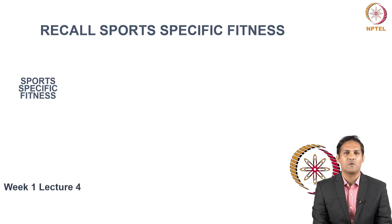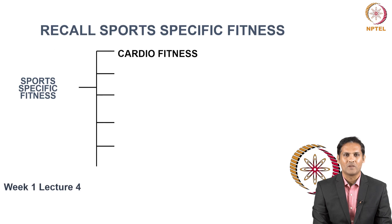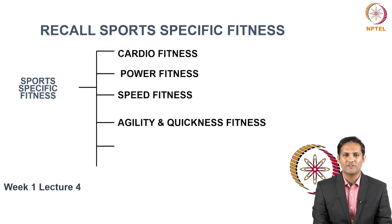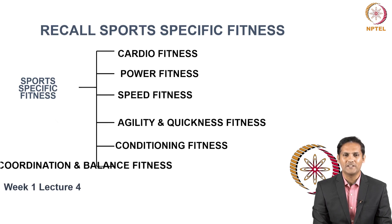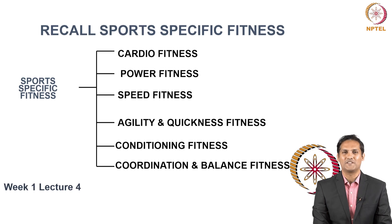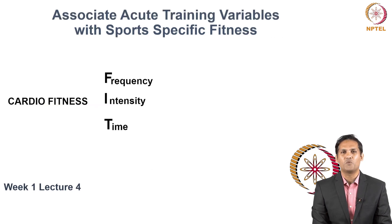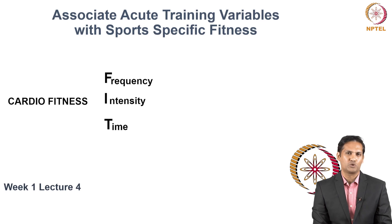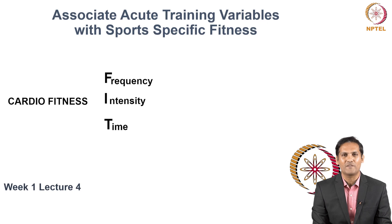Let's start by recollecting what the sports specific fitness variables are, which include cardio fitness, power fitness, speed fitness, agility and quickness fitness, conditioning fitness, and coordination and balance fitness. Now let's start one by one — how do you connect acute training variables to each and every fitness variable so that you can explain, describe and do more application using acute training fitness variables.